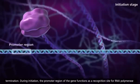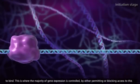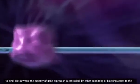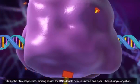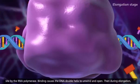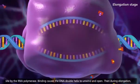During initiation, the promoter region of the gene functions as a recognition site for RNA polymerase to bind. This is where the majority of gene expression is controlled, by either permitting or blocking access to this site by the RNA polymerase. Binding causes the DNA double helix to unwind and open.